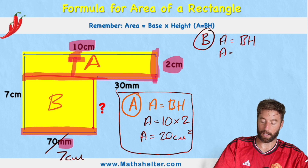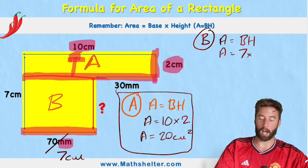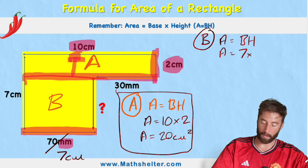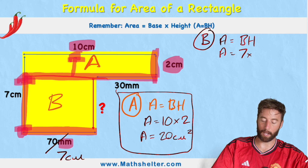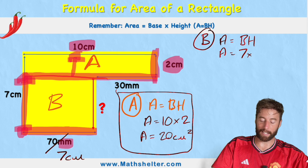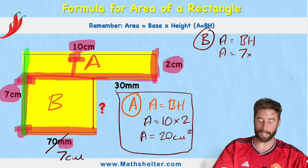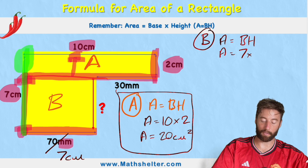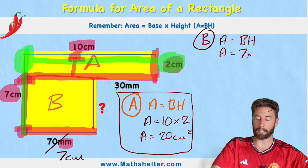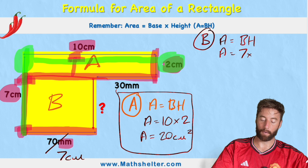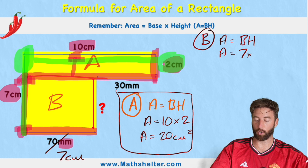So my area equals 7 times the height, which is going to be this length just here. Remember, we only need to go to that line there because this part would be part of shape A. We might look at this and think it's 7 centimeters, but no — 7 centimeters goes all the way from the bottom to the top. So we need to take this 7 centimeters and subtract this part here. Looking opposite, I can see that part was 2 centimeters, so my height is going to be 7 subtract 2, which is 5.